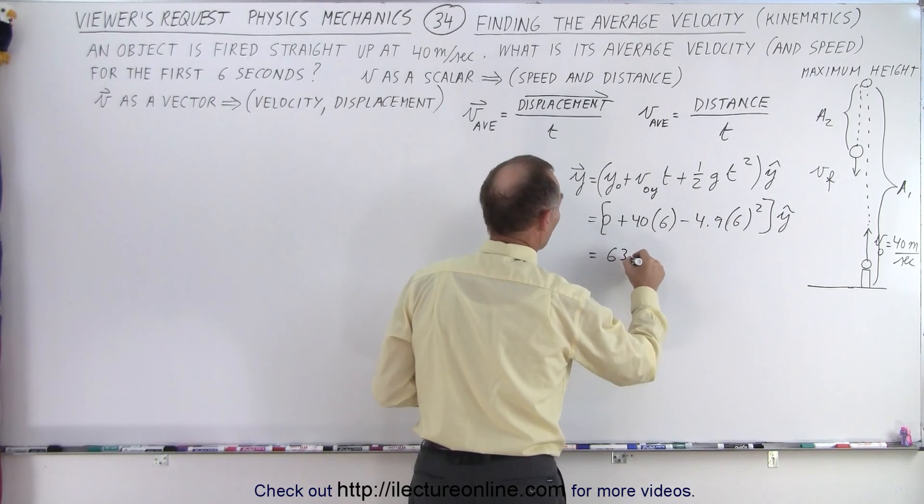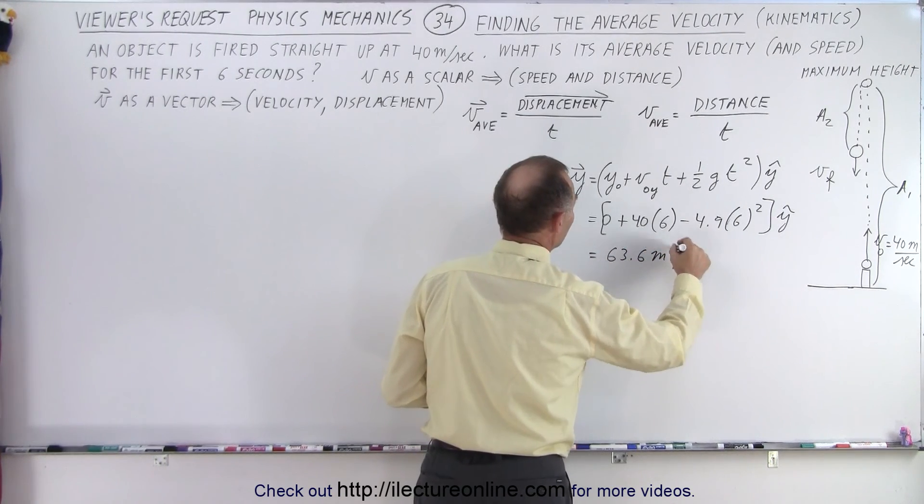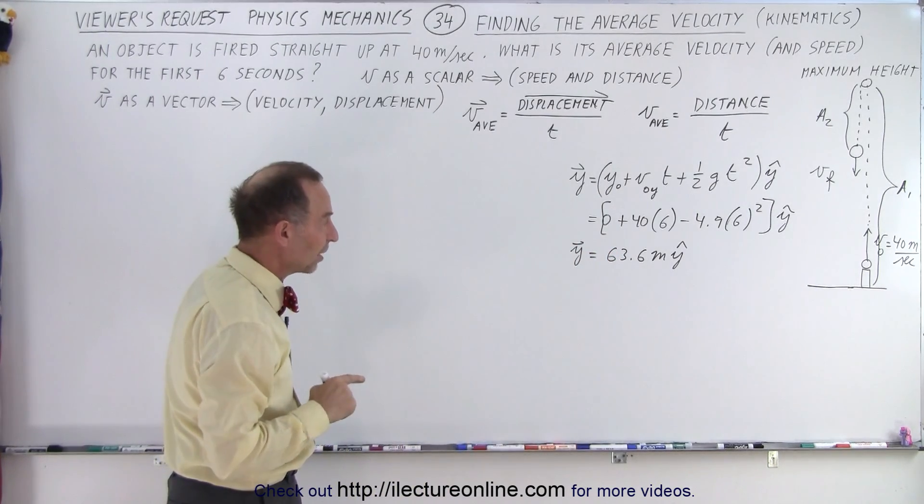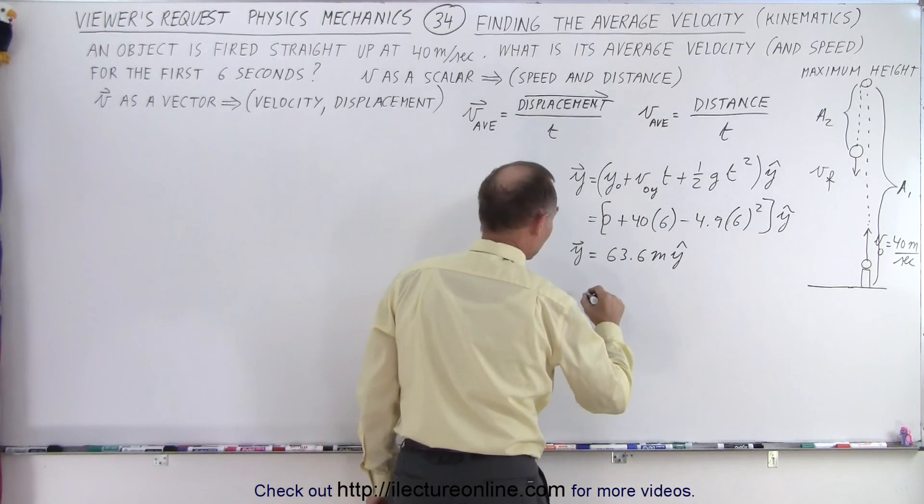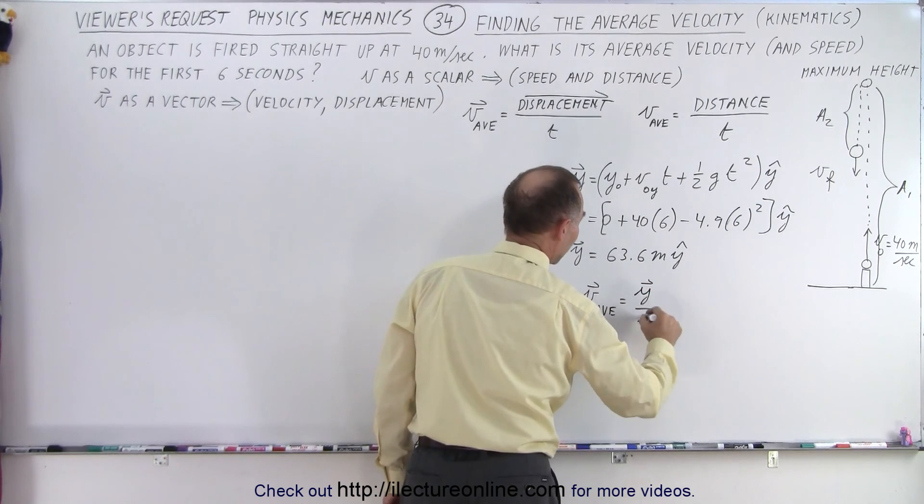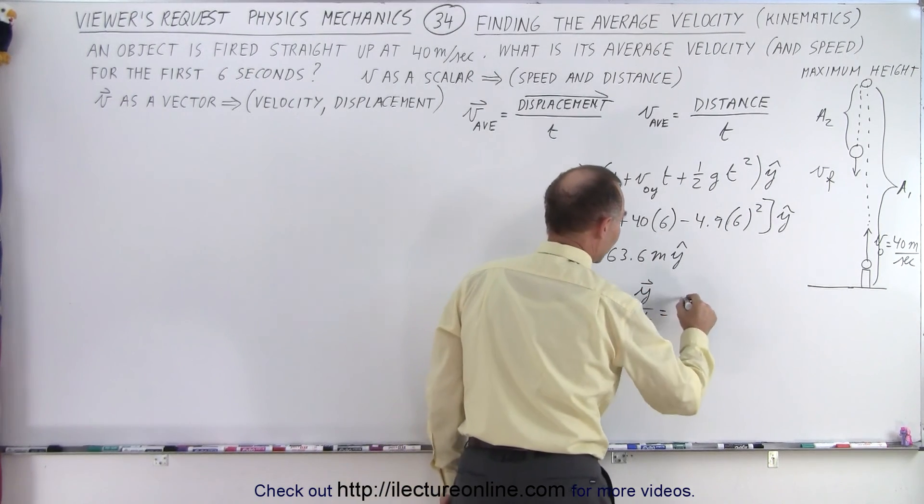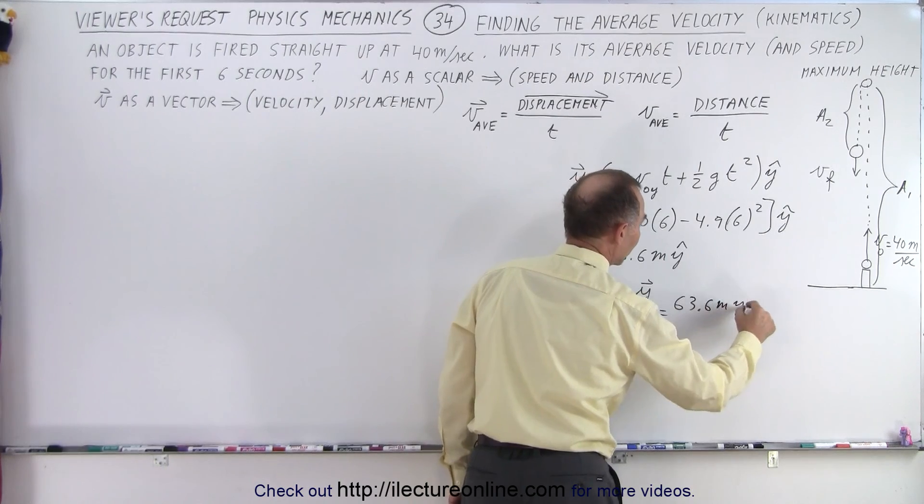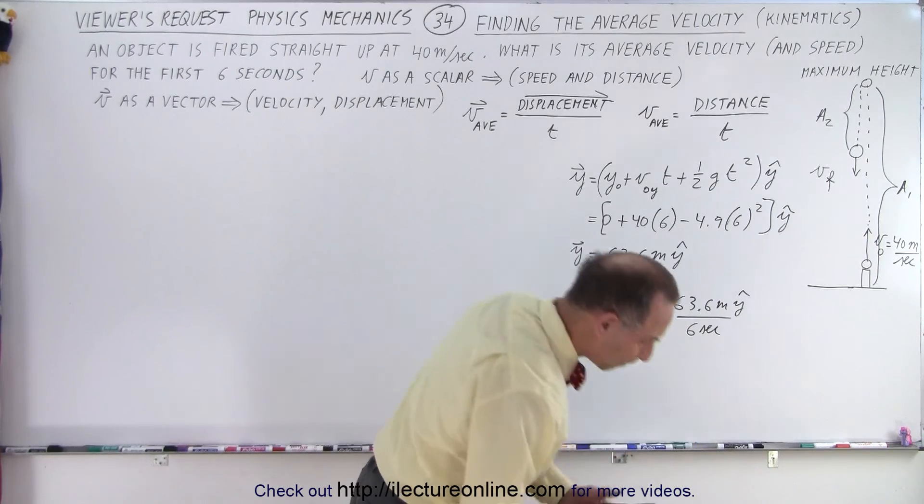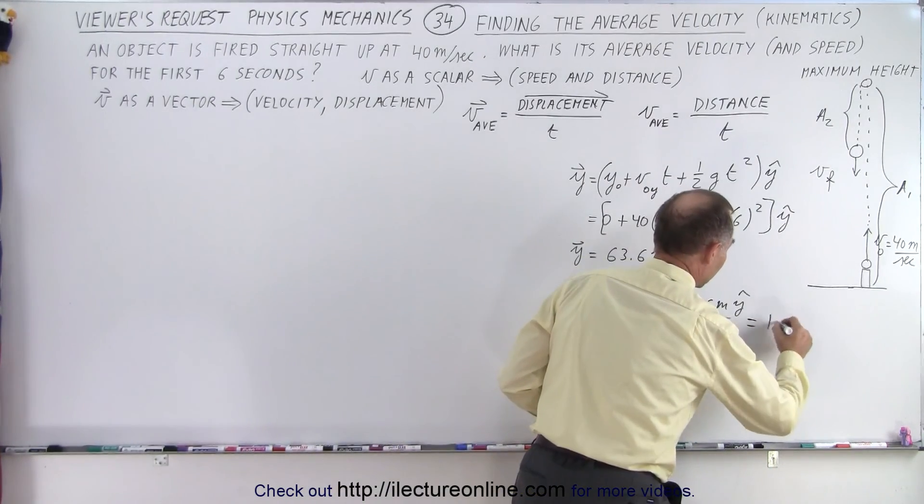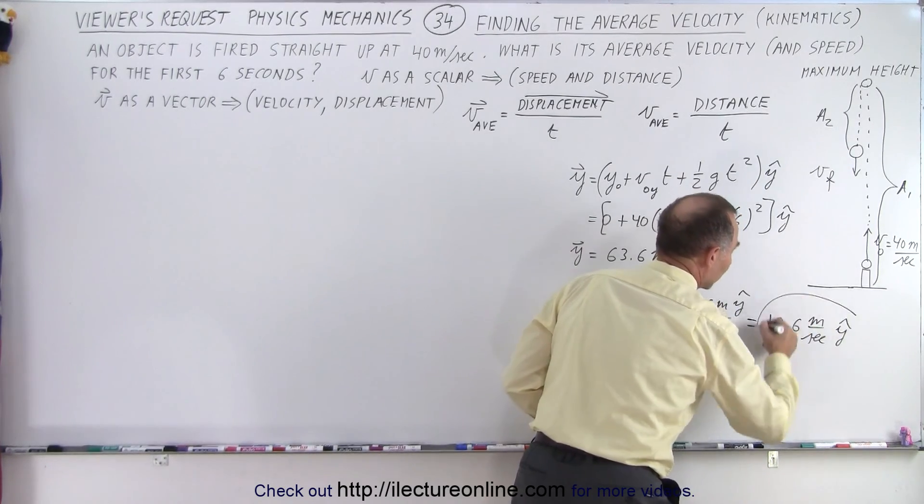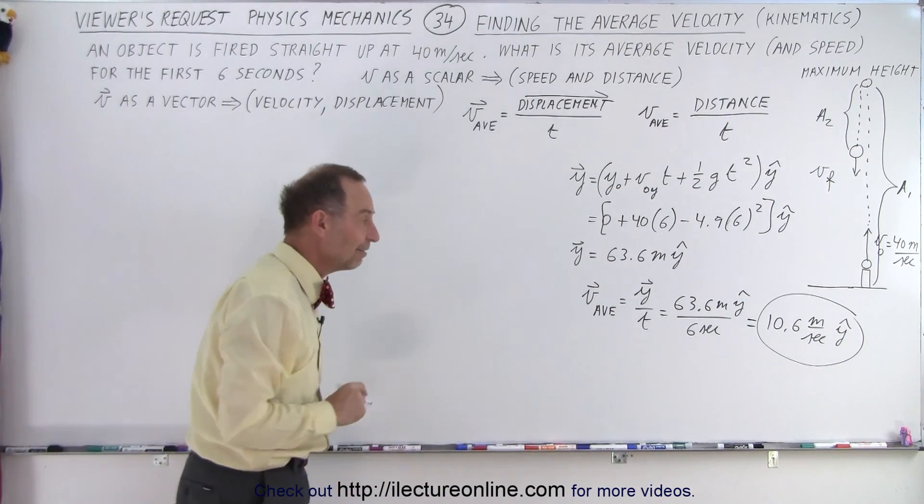So this is equal to 63.6 meters in the positive y direction, which is the displacement of that object. And then to find the average velocity in a vector quantity, that will be equal to the displacement divided by the time. So in this case, this is 63.6 meters in the y direction divided by six seconds.